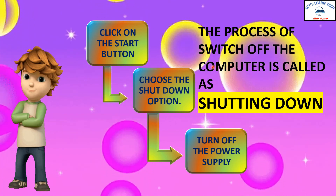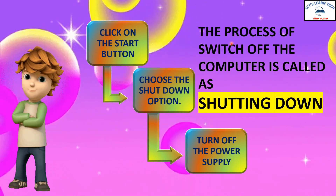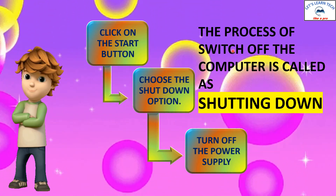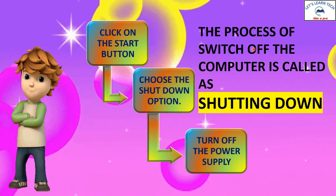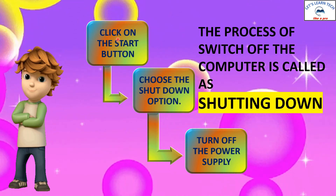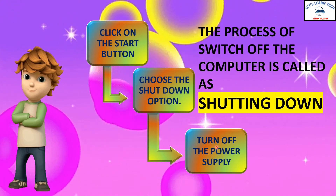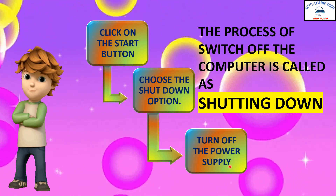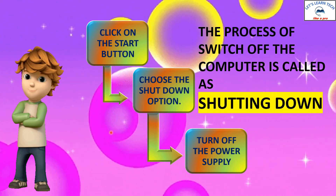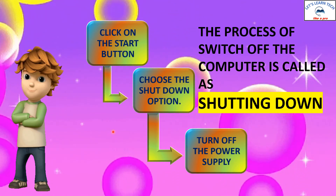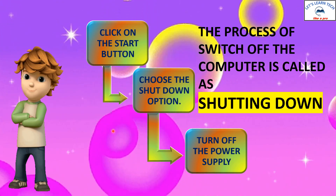After we complete working on our system, we need to shut down our system. The process of switching off the computer is called shutting down. To shut down our computer, click on the start button and choose the shut down option and then turn off the power supply. These are the steps to start and to switch off your computer. You have to follow these steps in the right way so that your computer will not get spoiled.